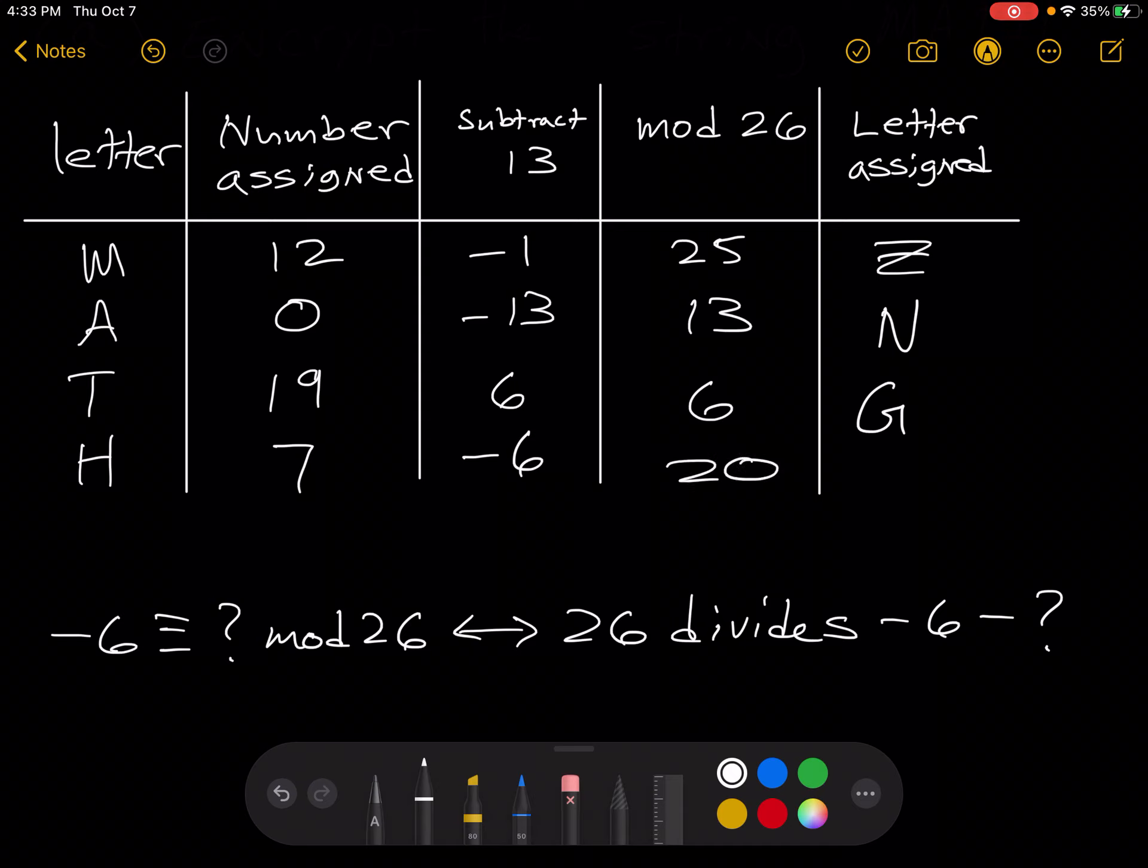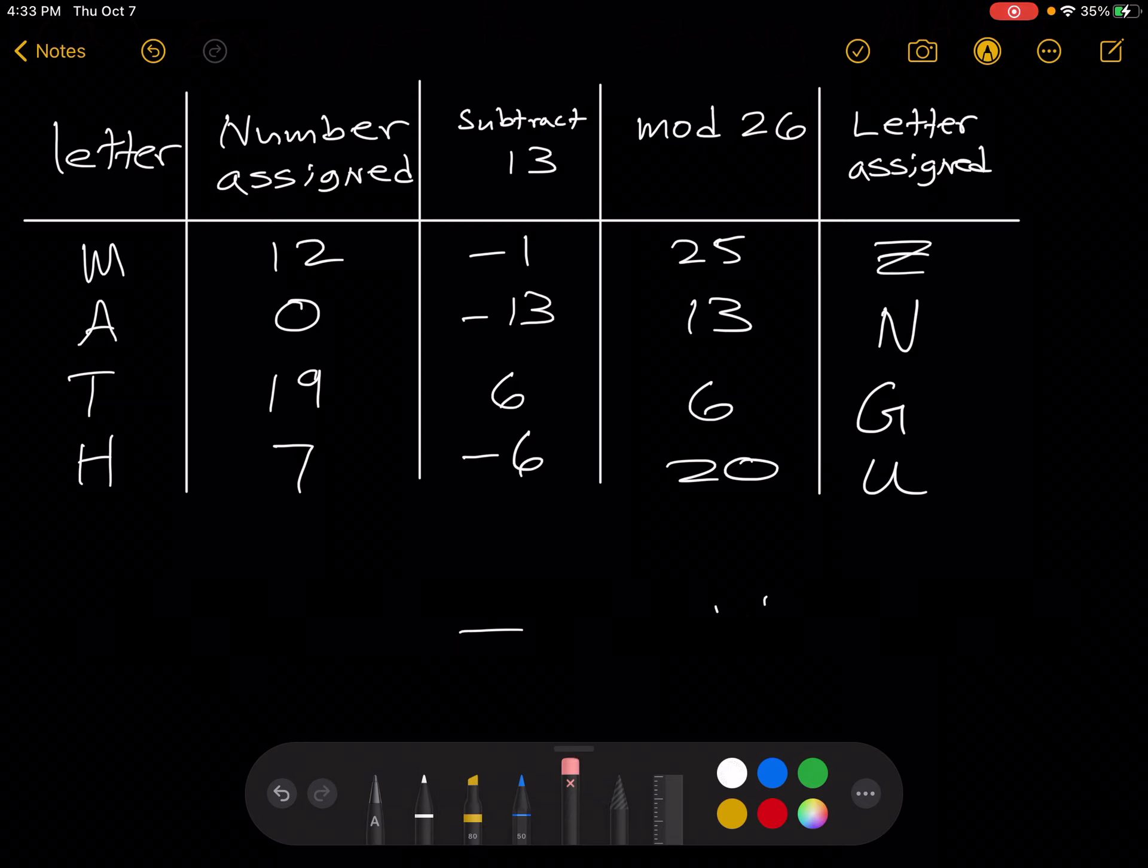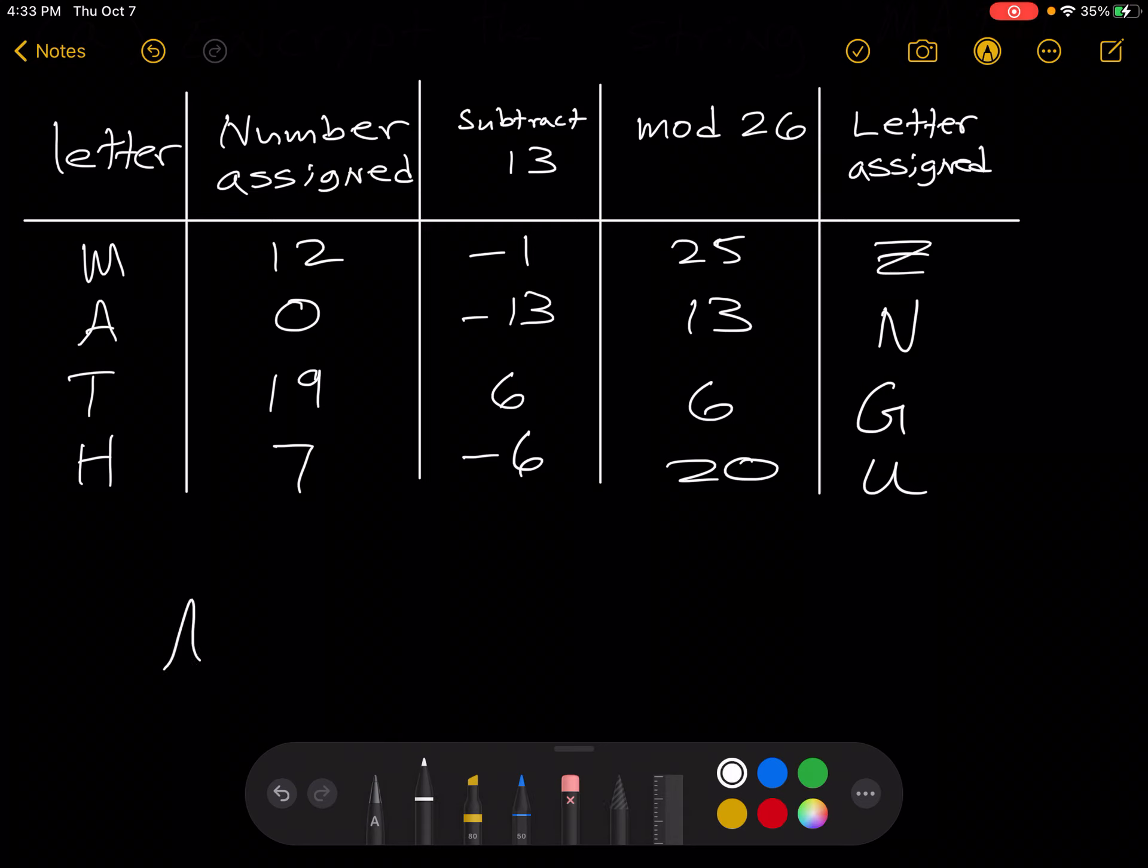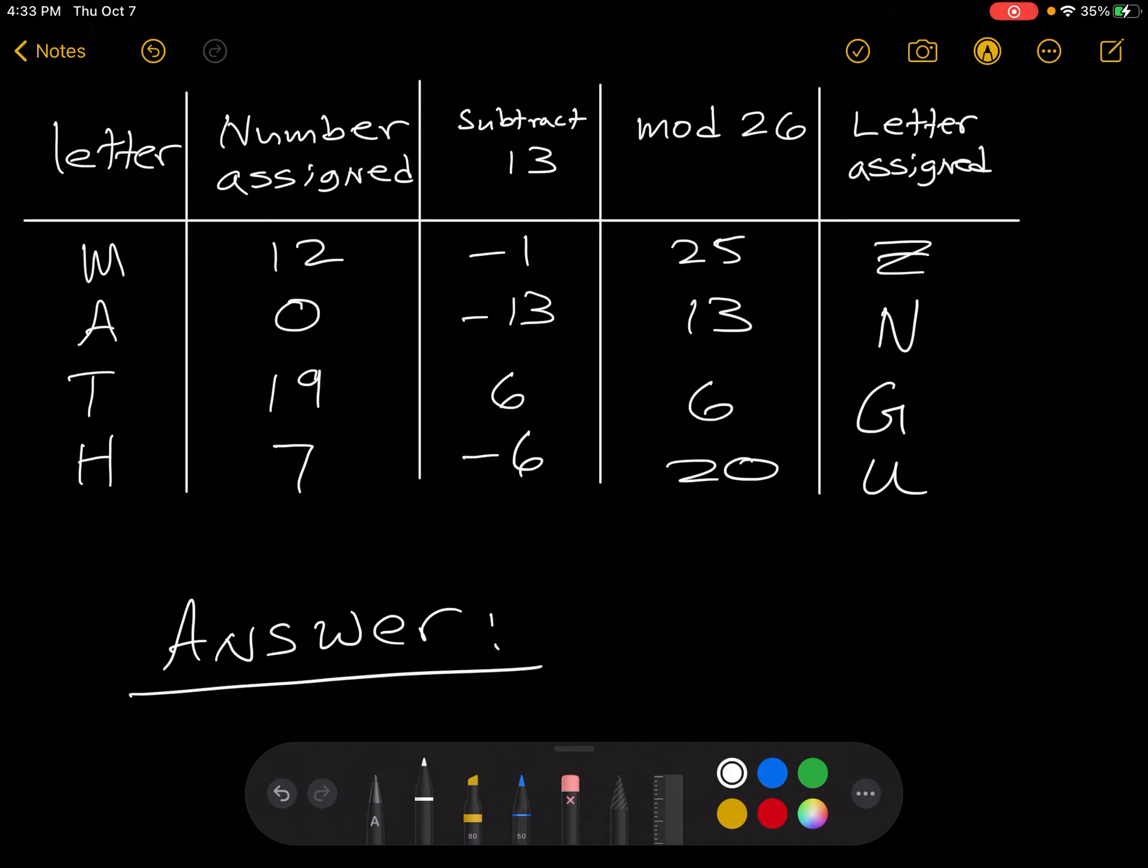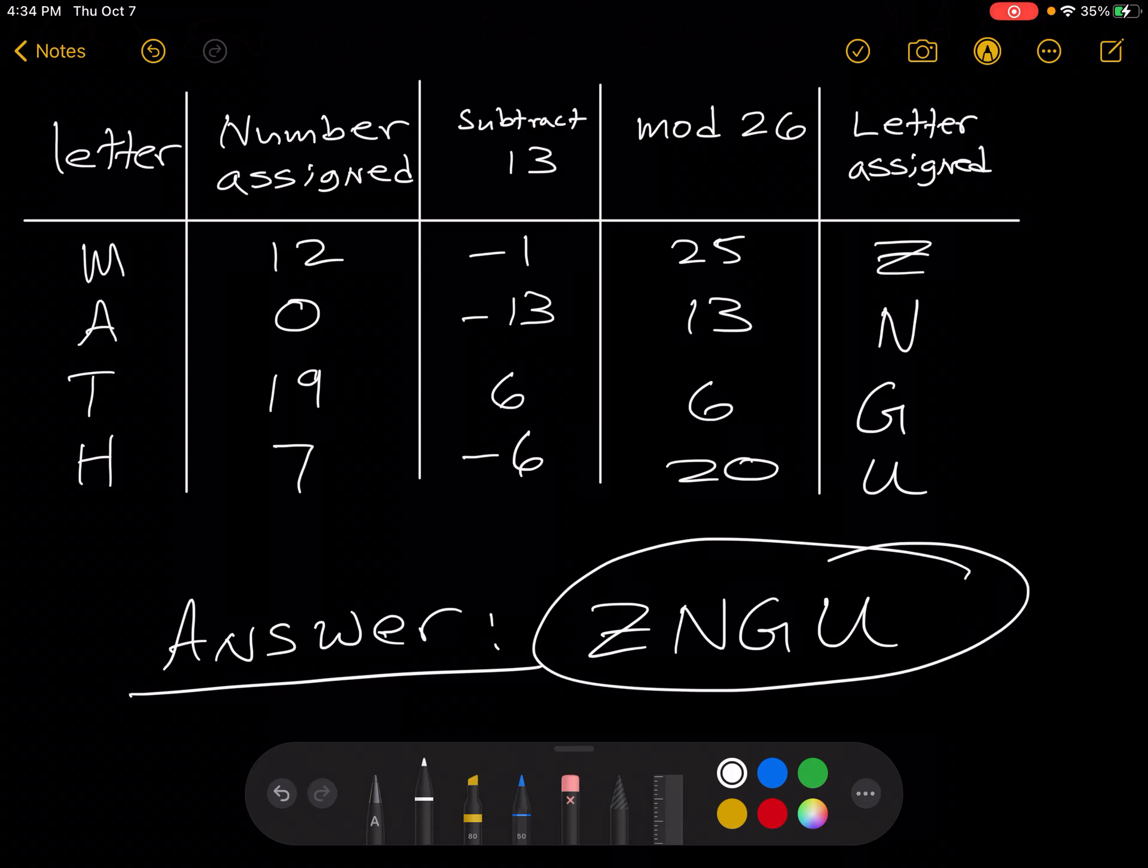Looking at the table, the number 20 is assigned the letter U. And so now our answer is the string ZNGU. Thank you.